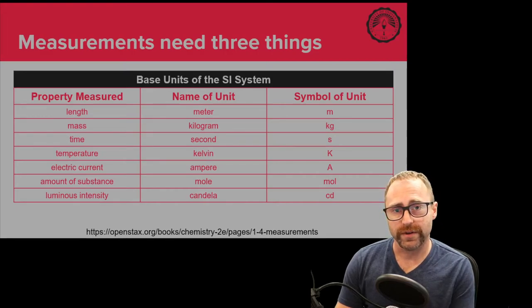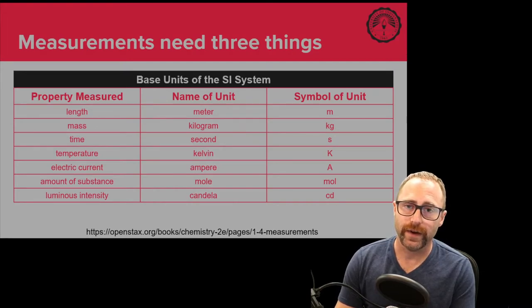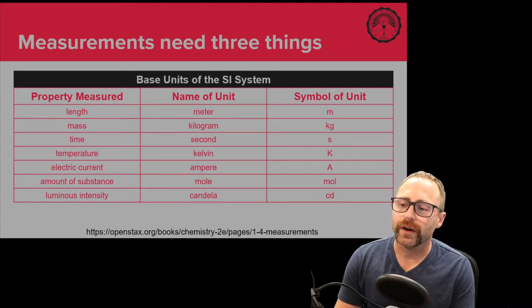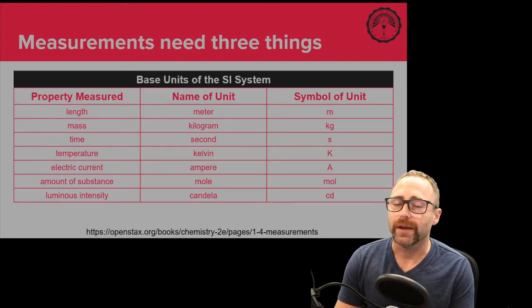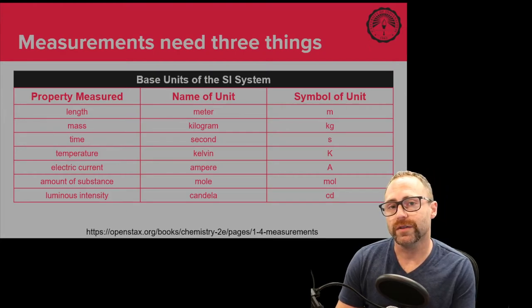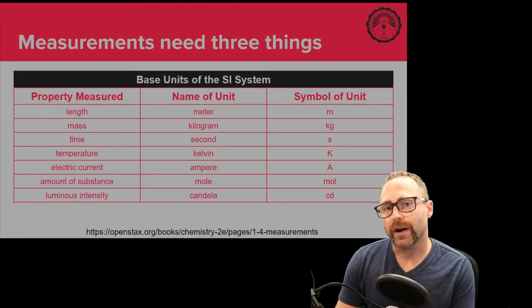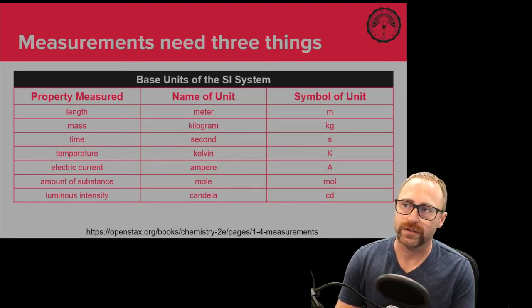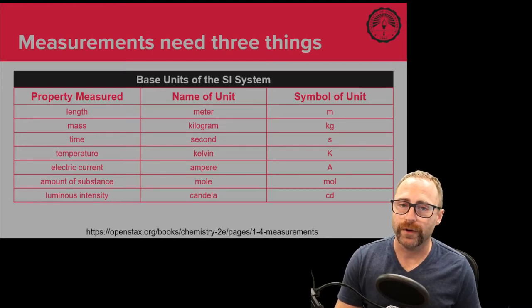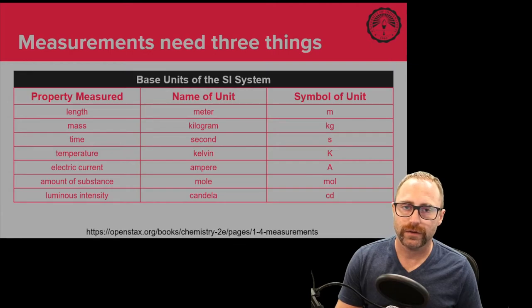We will be doing some examples of converting from Kelvin into Celsius into Fahrenheit as part of our course. When it comes to electrical current, we're not going to be really dealing with that much here in general chemistry 1. Luminous intensity we're not going to be dealing with, but the amount of a substance, the mole, we will be using quite a bit. We're going to wait until chapter two and three, but we're going to use that one very extensively throughout the rest of our course.